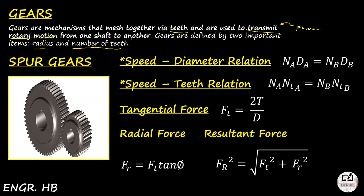The first type is spur gears. I won't discuss all the nomenclatures in detail — computation is the main purpose here, especially for the board exam. Spur gears have teeth that are straight and parallel to the shaft axis. They are used to transmit motion and power without slippage between parallel shafts, and are the most commonly used type in industrial applications. We have these formula variables: N for speed, D for diameter, NT for number of teeth, F for force, T for torque, and so on.